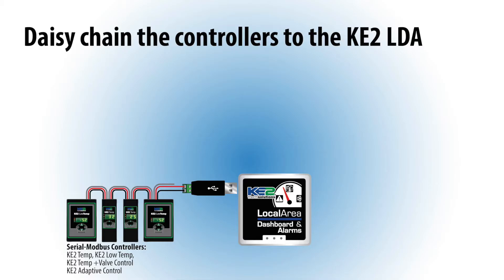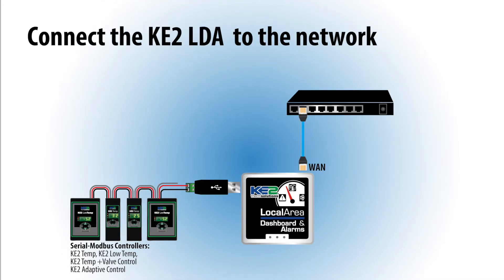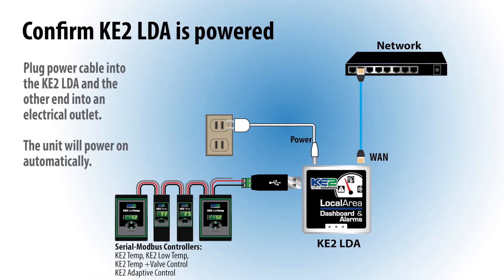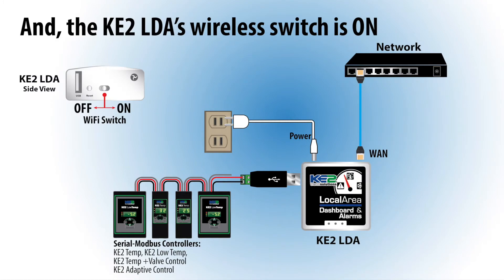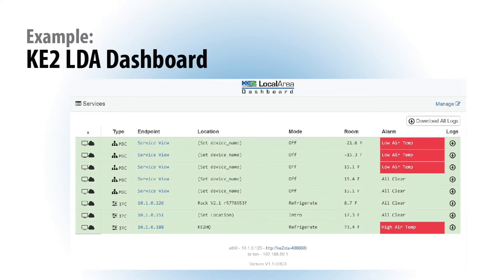First, you will need to connect the controllers to the network by daisy-chaining up to 10 controllers together and connecting them to the Keto LDA. Then, connect from the Keto LDA's WAN port to the customer network. Make sure the LDA is plugged in and the wireless switch is moved to on. The Keto LDA will automatically find the first 10 Keto Therm controllers connected to the network and display them on a dashboard.